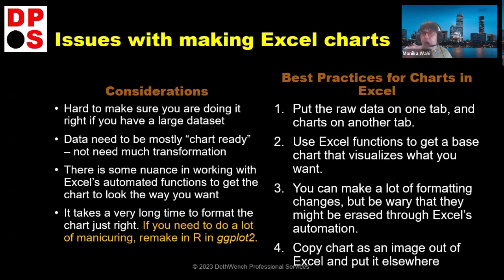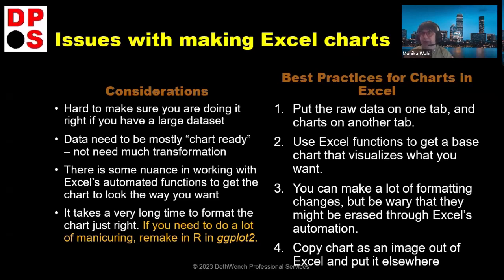Raw data on one tab, charts on other tabs — the charts will refer to that data tab. Then use Excel functions to get a base chart that visualizes what you want. Your order of operations should be: step one, format your data; step two, get the best chart automatically out of the wizard before you start editing it. Use automation at the beginning and then tweak it, because if you apply more automation later it might overwrite your edits. Then you can copy the chart as an image and place it elsewhere.